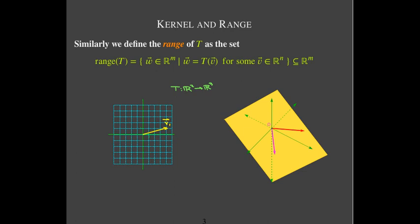Any vector in the input space is going to get mapped to some vector in the range, because the range only consists of vectors which are in the output space. So if that's v1, then over here in the range, I've got its image. Remember, the domain is always all of the input space, so every vector here is represented in the range. In this case, my codomain is R3, and I've drawn the range as a plane, but it doesn't have to be — it could be any of the subspaces in R3.